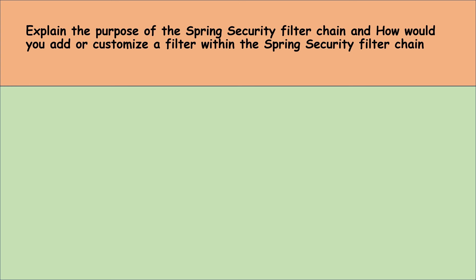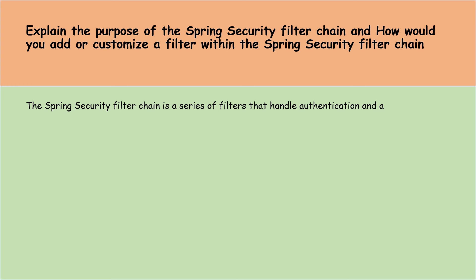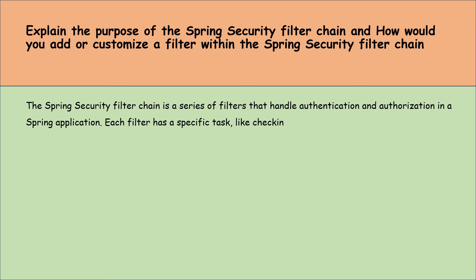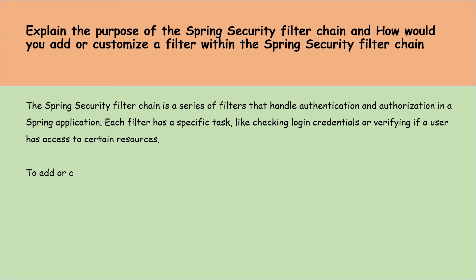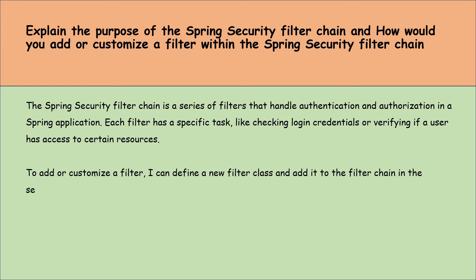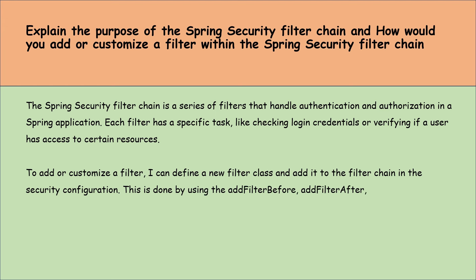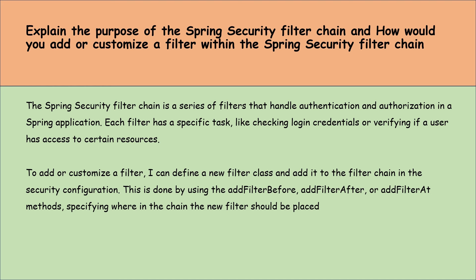Explain the purpose of a Spring Security filter chain and how you would add or customize a filter within it. The Spring Security filter chain is a series of filters that handle authentication and authorization in a Spring application. Each filter has a specific task, like checking login credentials or verifying if a user has access to certain resources. To add or customize a filter, I define a new filter class and add it to the chain in the security configuration using methods like addFilterBefore, addFilterAfter, or addFilter, specifying where in the chain the filter should be placed.